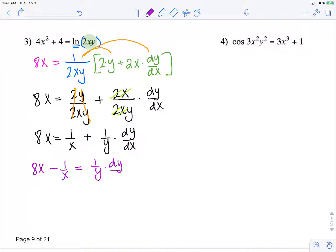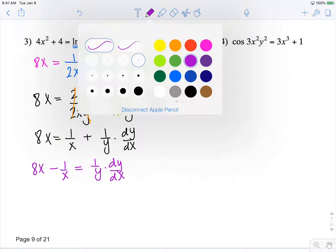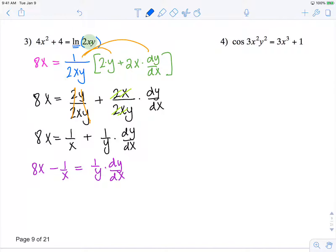y times dy/dx. And then in order to leave dy/dx by itself, I'm going to multiply by y